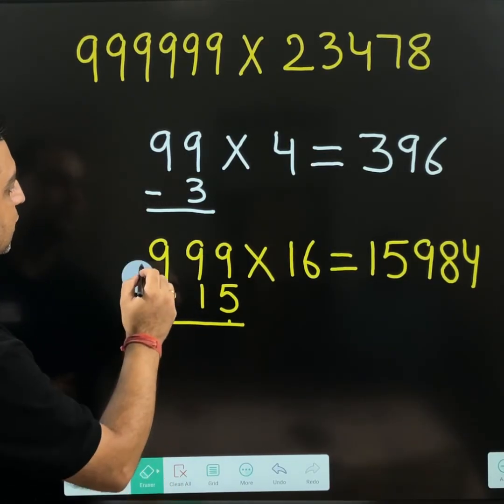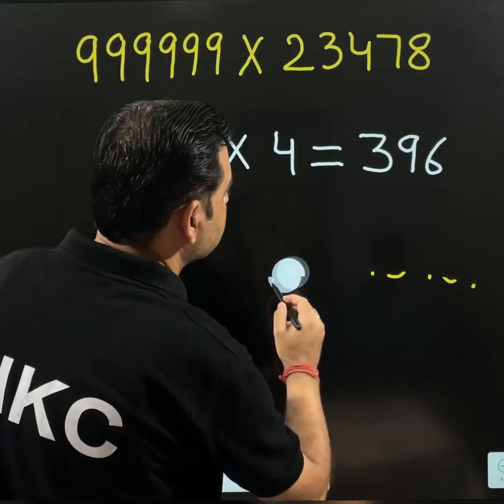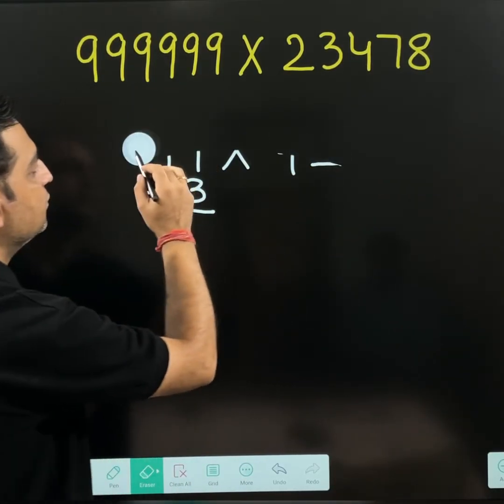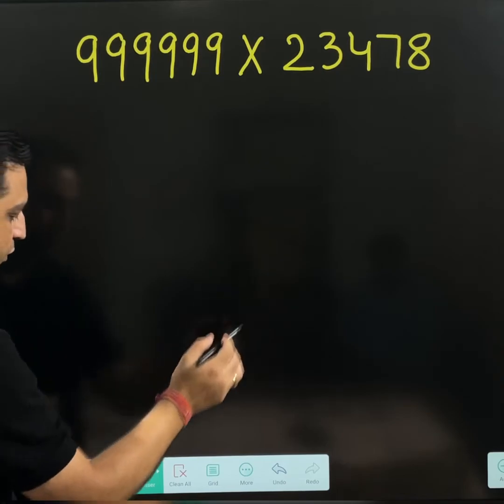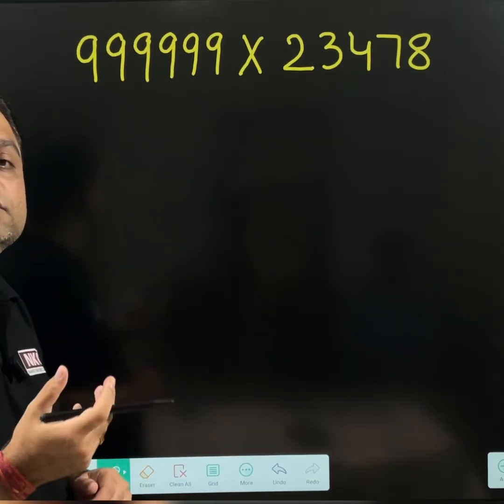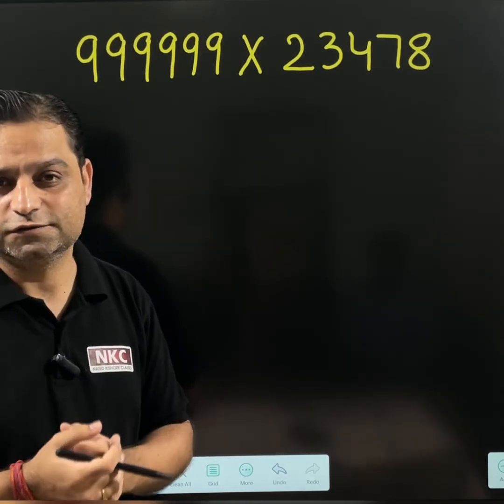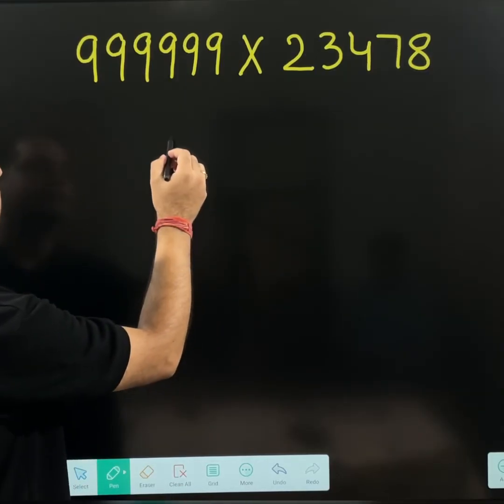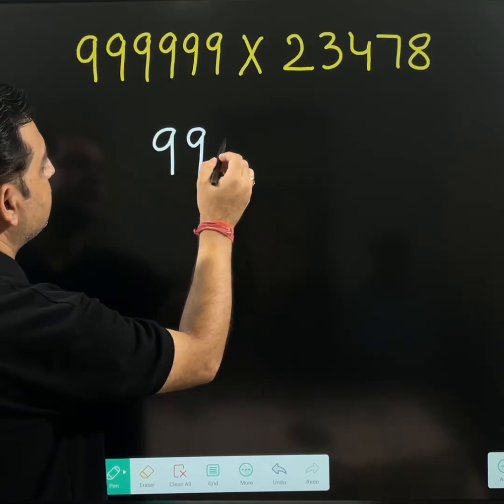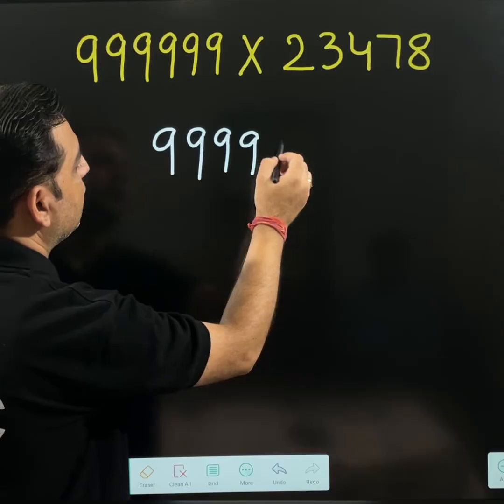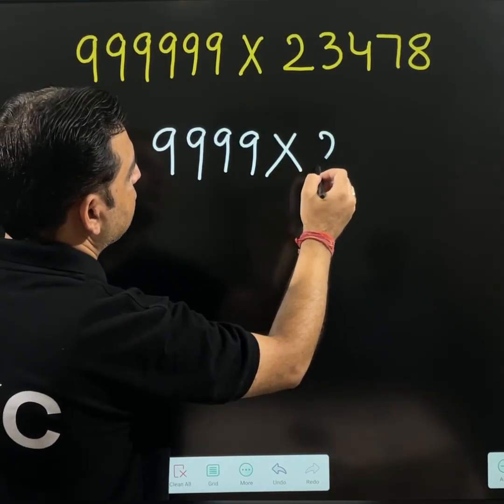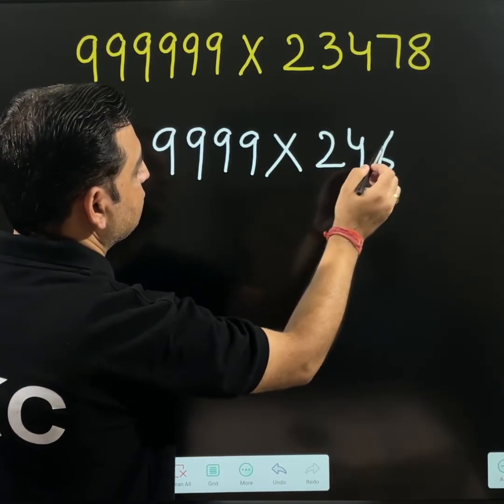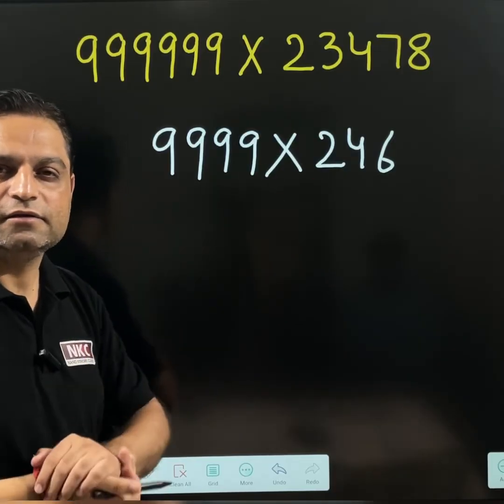Following the same method, you can do any big number. You can see one big number is there on the screen. We will slowly reach at this point as well. But before that, we will try some more questions. Let me show you. Let's suppose 999, I want to multiply it with 246.